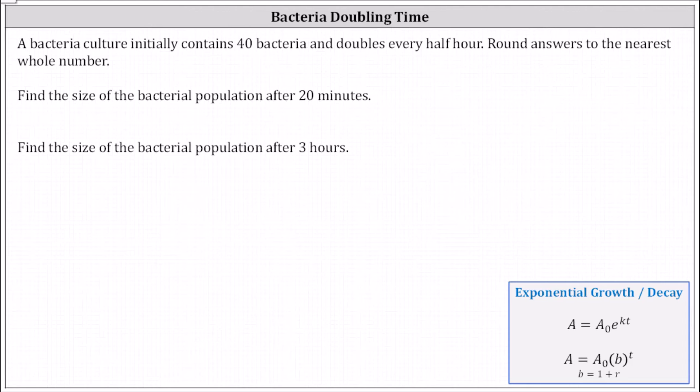A bacteria culture initially contains 40 bacteria and doubles every half hour. Round answers to the nearest whole number. We want to find the size of the bacterial population after 20 minutes and then the size after three hours.